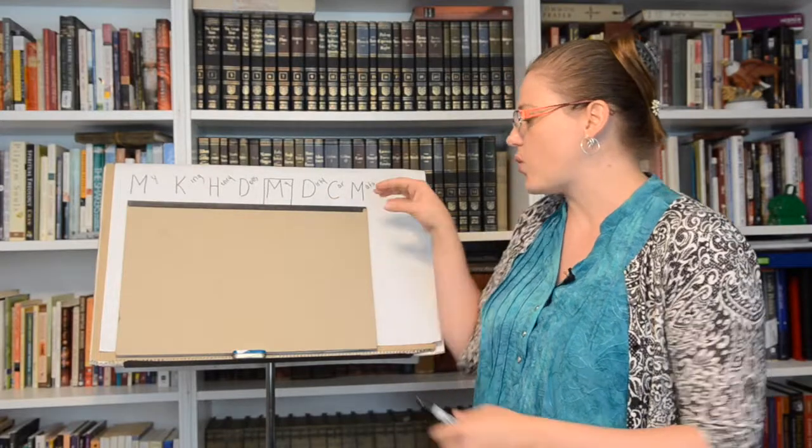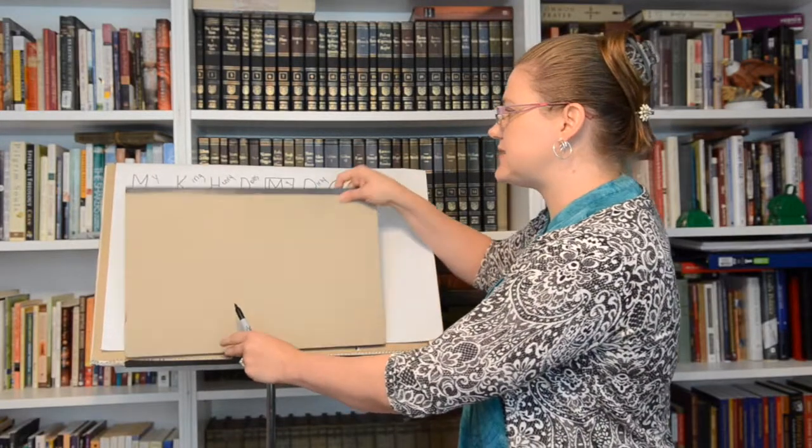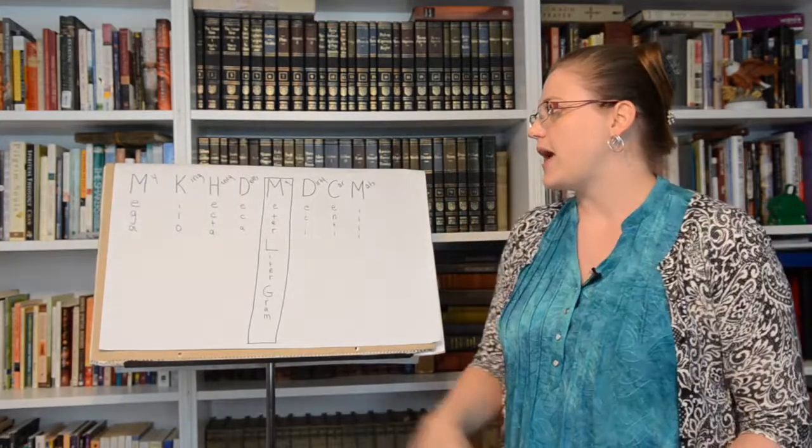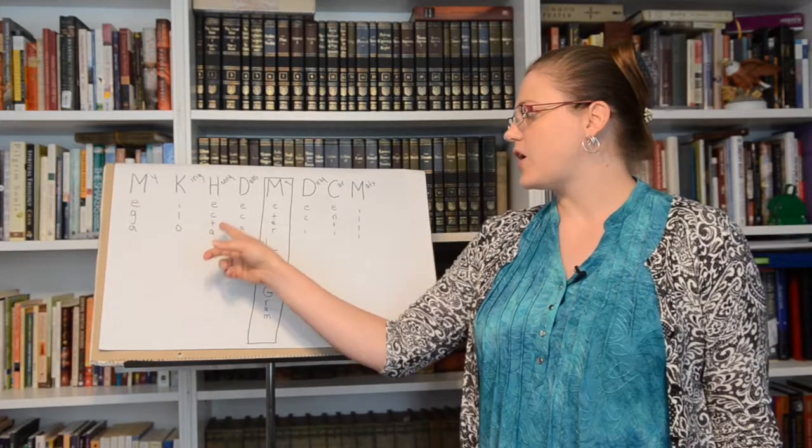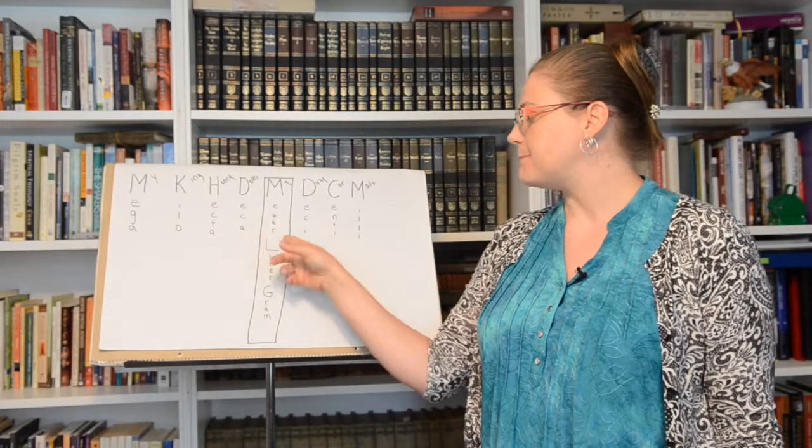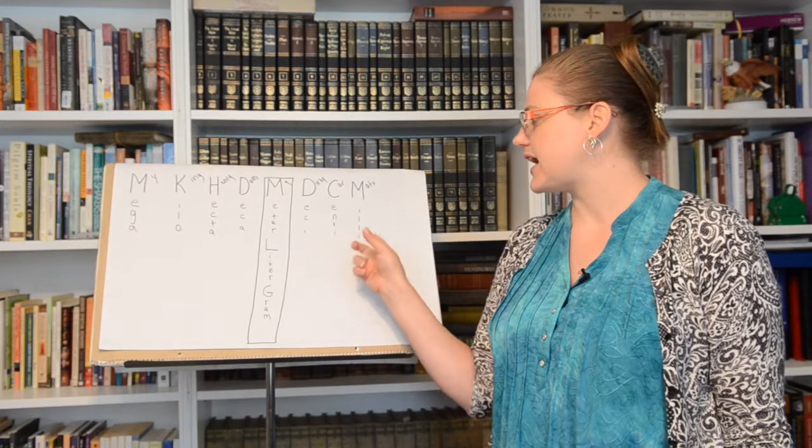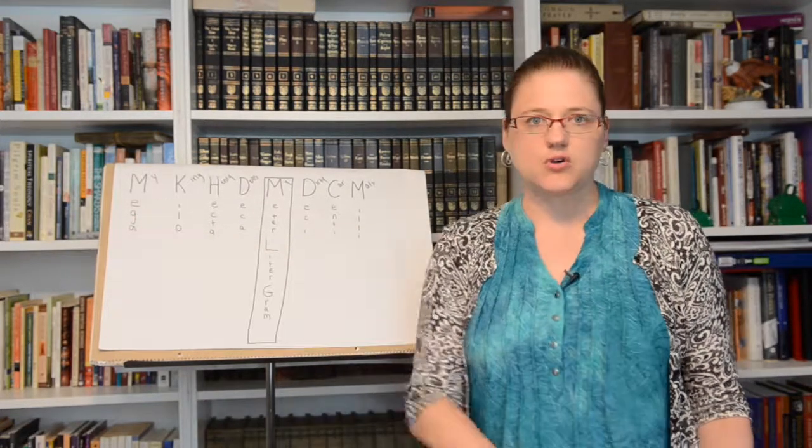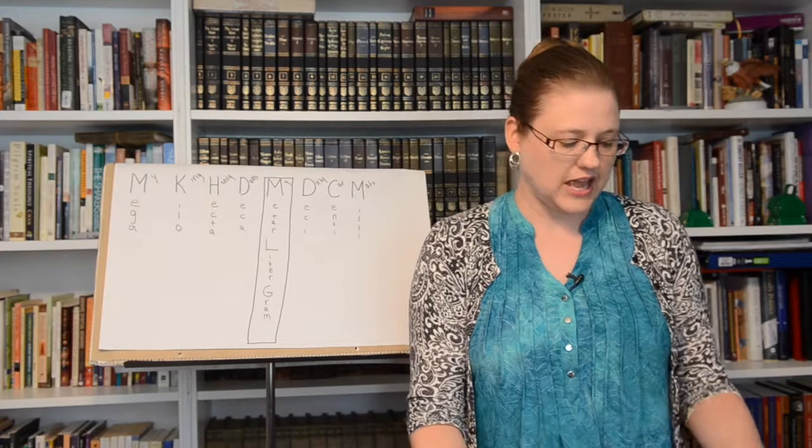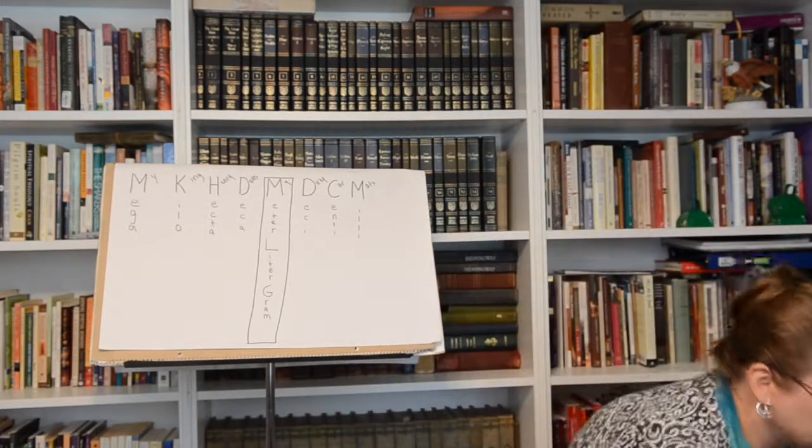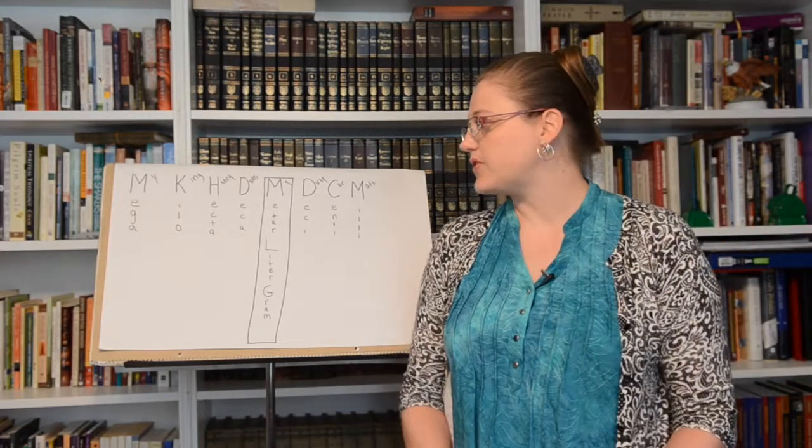But each one of these stands for one of the different units in the metric system. So M is for mega, kilo, hecta, deca, meter, desi, centi, and milli. And each one of these, as you know, goes into each other. There's 10 units for each one that go into the other units.